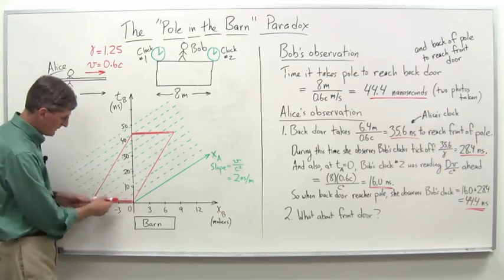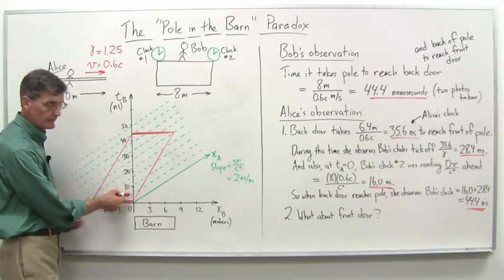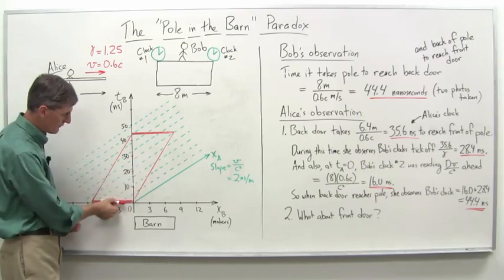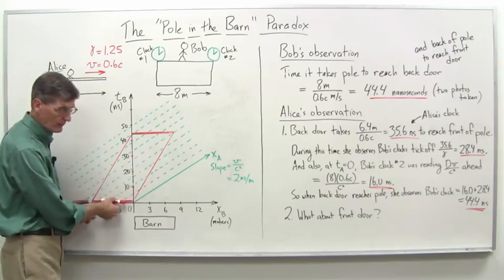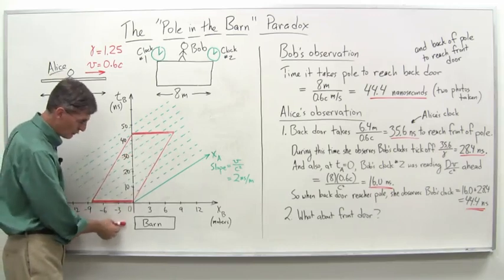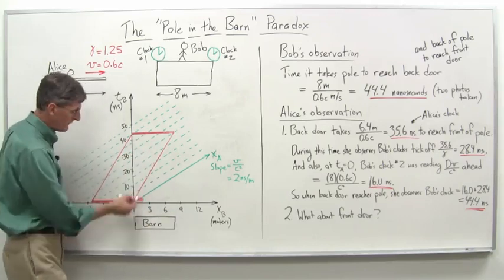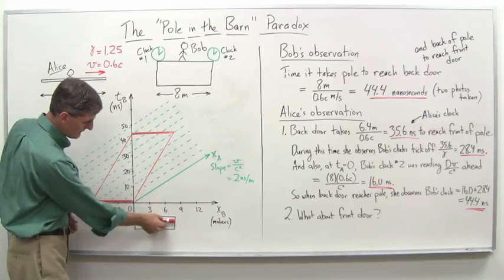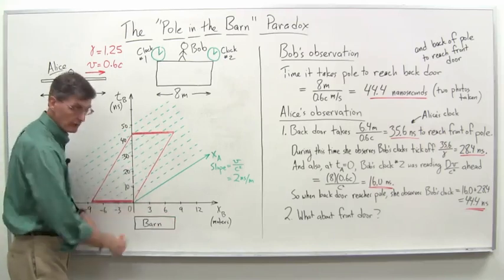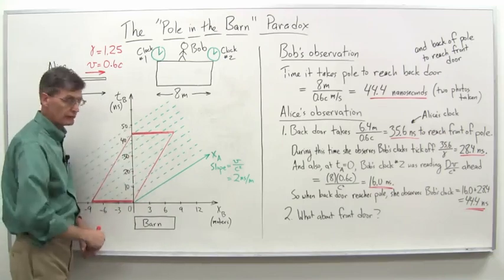And then as time goes on, when it's at 10 nanoseconds here, it's at this position here, and then at 20 it's here, 30 here. In other words, in terms of the space-time world line, it moves this way, which of course physically means it's moving into the barn like that. And then when it reaches this point right here, it's reached the end of the barn there, and of course it fills up the whole barn from one end to the other, from Bob's perspective.